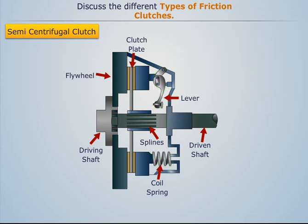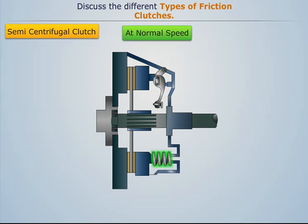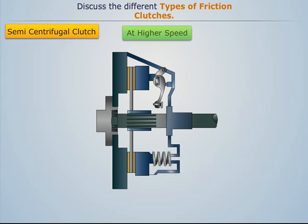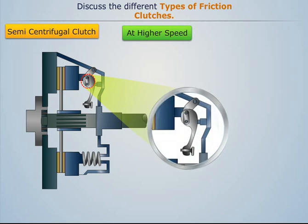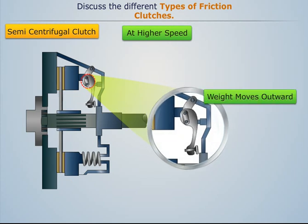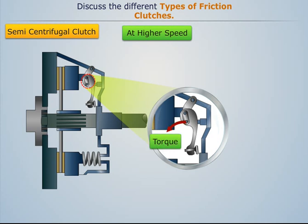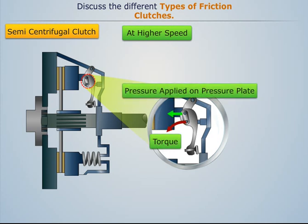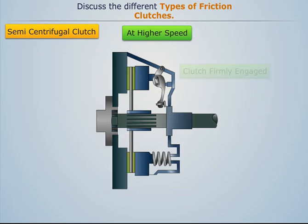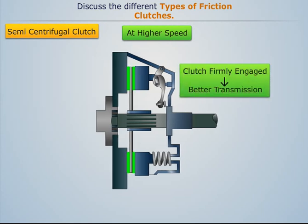The semi-centrifugal clutch consists of three hinged and weighted levers and three clutch springs alternately arranged at equal spaces on the circumference. These levers are hinged to the pressure plate through a needle bearing and also hinged to the clutch cover at point B. The upper side of each lever is weighted. At normal speeds, the springs keep the clutch engaged, but at higher speeds the weights on the levers tend to move outwards due to centrifugal action. This introduces a torque about hinge B, causing the lever to put additional pressure on the pressure plate, thus keeping the clutch firmly engaged and providing better transmission.